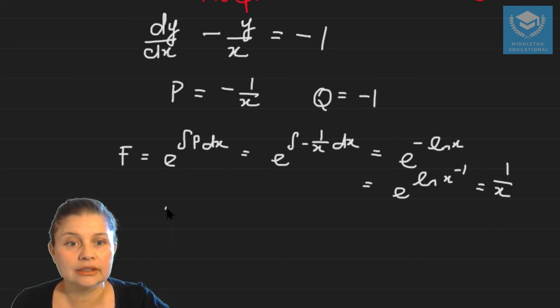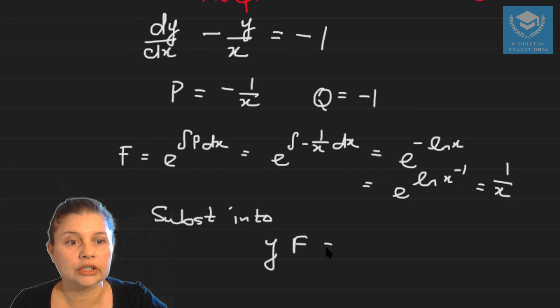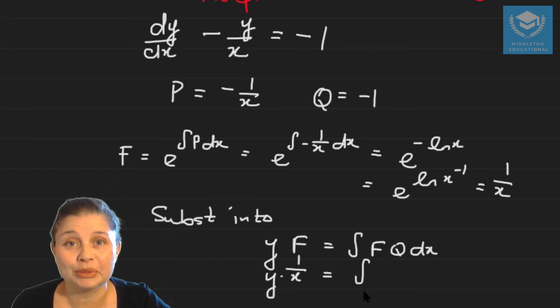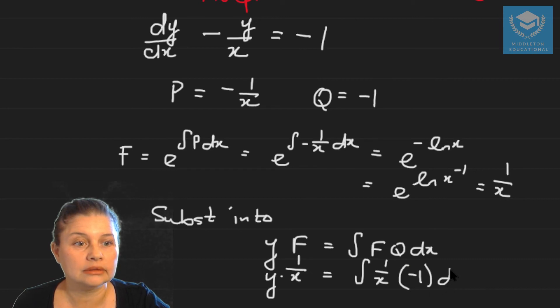Once we've got that we substitute into y F equals the integral of F q dx. And our F is going to be one over x. Then we have F which is one over x and q in this case is minus one dx.